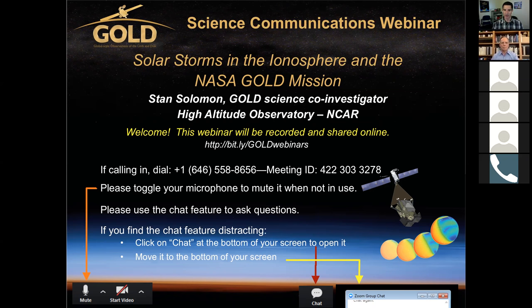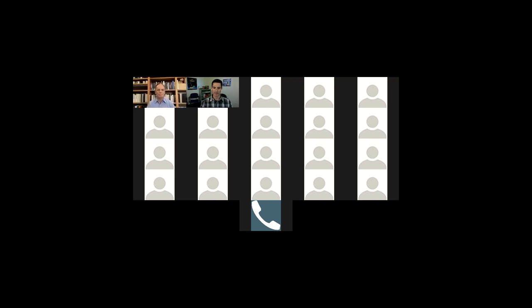It's my pleasure to introduce Dr. Stan Solomon. Stan is a scientist at the National Center for Atmospheric Research and their High Altitude Observatory. He specializes in the physics and chemistry of the upper atmosphere and ionosphere. Stan currently leads their Geospace Frontier section and he's currently working on upper atmosphere model developments, the effects of solar and geomagnetic variability, and airglow simulations for the GOLD mission. Stan, I am going to turn it over to you to share your PowerPoint.